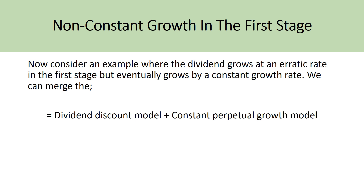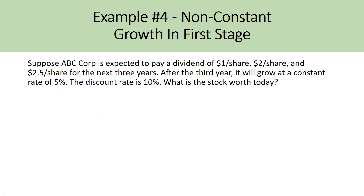The non-constant growth in the first stage has no formula — it's a procedure combining the dividend discount model and the constant perpetual growth model. Suppose ABC Corp is expected to pay dividends of $1, $2, and $2.50 a share for the next three years. After the third year, it will grow at a constant rate of 5%, with a discount rate of 10%. After year three, it becomes a constant perpetual growth question, but the first three years had a different growth rate, so they must be discounted individually and then combined.